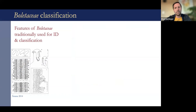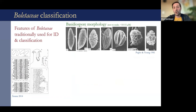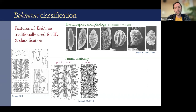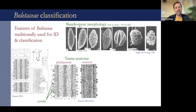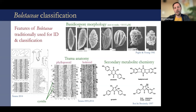Traditionally, the Boletaceae were classified by morphology. Micromorphology in particular has been used extensively. Basidiospore morphology was used in the 80s and is still important today. The trama anatomy of the tubes was used to divide two major types — boletoid and phylloporoid types. The presence, shape, and color of cystidia were also used. Secondary metabolites have also been used more at the ordinal level. But none of these characters have really given us a natural classification, because that great variation juxtaposed with convergence makes it really difficult to sort through which characters are truly useful.